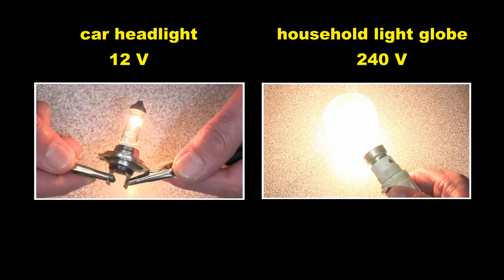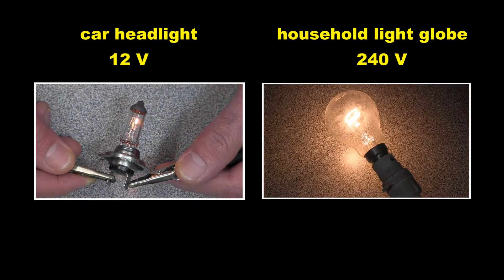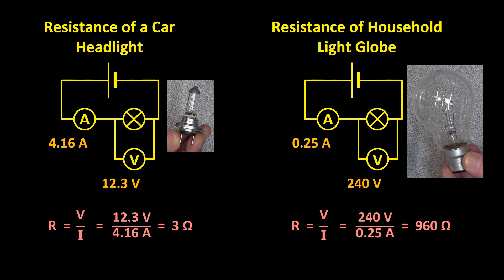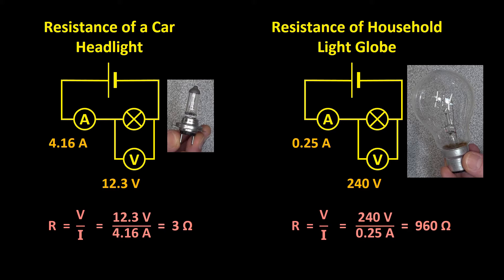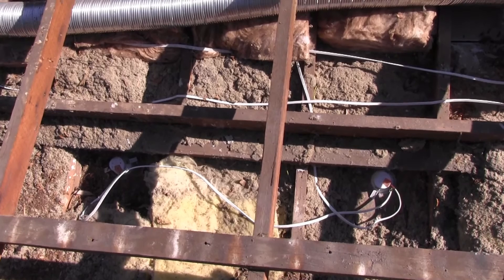In our last episode, we saw how manufacturers of light globes design light globes with different resistances depending on how much current they need to operate correctly. They also have to ensure that the electrical equipment is safe of course. The electrical connections in our homes also have to be safe.